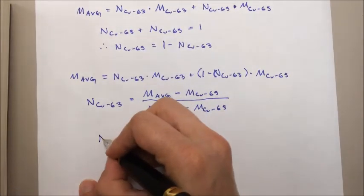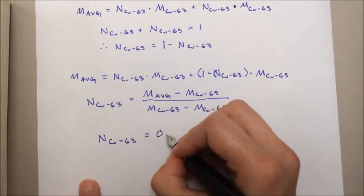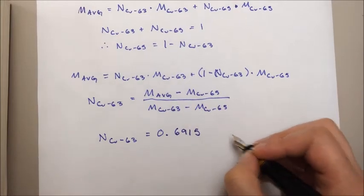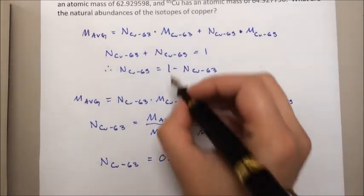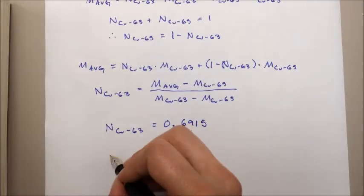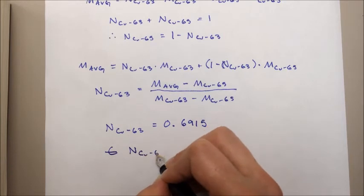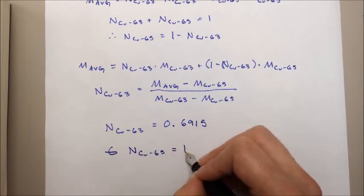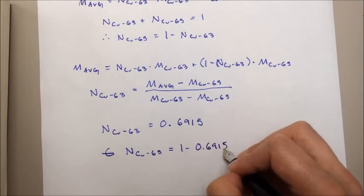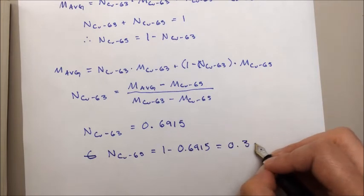And if you take this value and plug it back into our expression for the natural abundances, that means the natural abundance of copper 65 equals 1 minus 0.6915 or 0.3085.